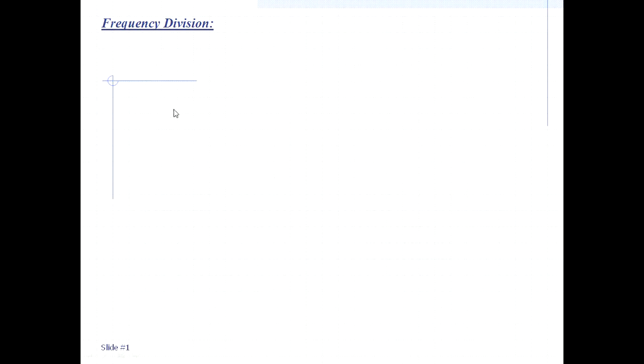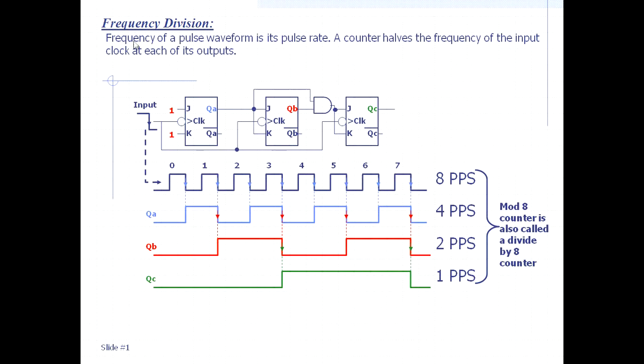Frequency division - while we are talking about counters, frequency of a pulse waveform is its pulse rate. What is frequency? It is the pulse rate. And a counter halves the frequency of the input clock at each of its outputs.